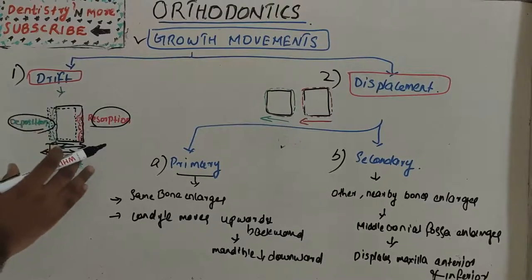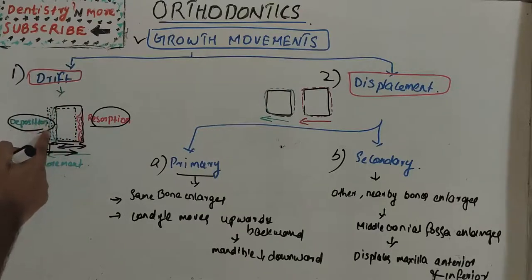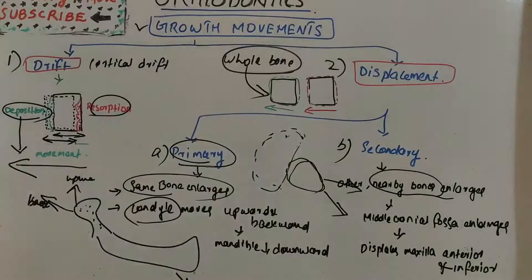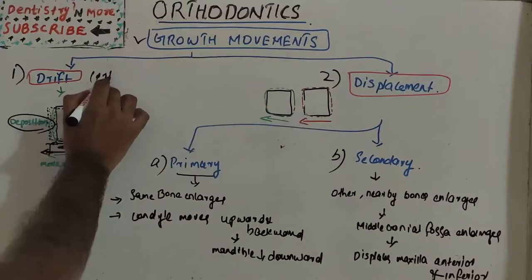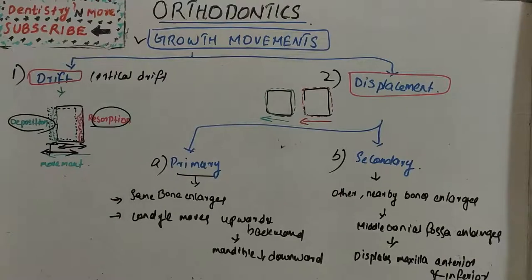The first one is drift. The concept is simple — drift is by resorption and deposition. It is by the osteogenic properties of the bone itself: one side will be resorbed and the other side will be deposited, and the position changes or the movement happens. Displacement is the movement of the bone to a new position as a whole. Cortical drift is a growth movement of an enlarging portion of a bone by the remodeling of its own osteogenic tissues.